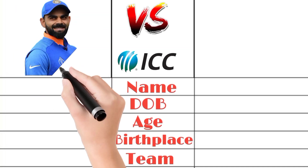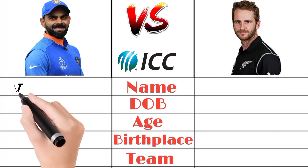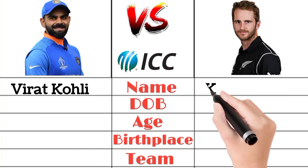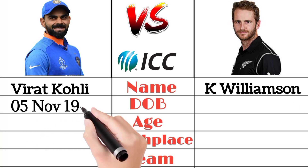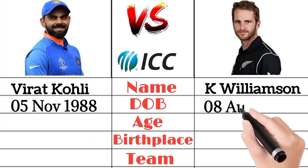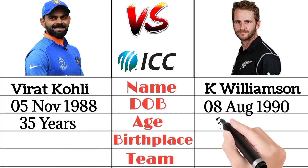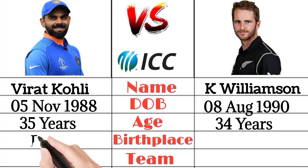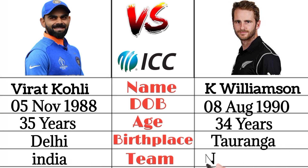Welcome. In this video I will tell you the Virat Kohli vs Kane Williamson comparison with all stats. First, personal information — name, date of birth, age, birthplace. Virat Kohli's date of birth is 5 November 1988; Kane Williamson's is 8 August 1990. Virat Kohli is 35 years old and Kane Williamson is 34. Virat Kohli's birthplace is Delhi; Williamson's is Tauranga. Virat Kohli plays for India and Kane Williamson plays for New Zealand.